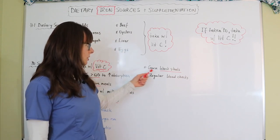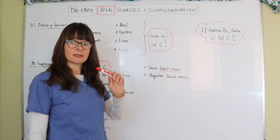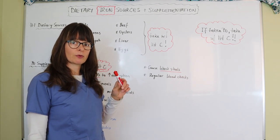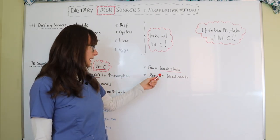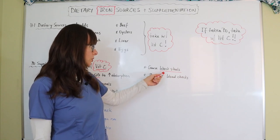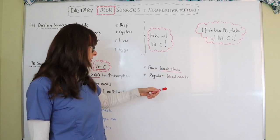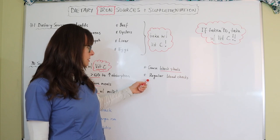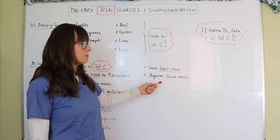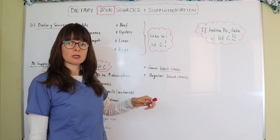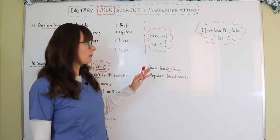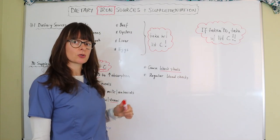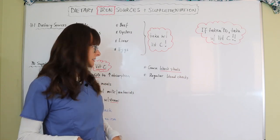Iron supplements can also cause black stools because it's a black substance that the patient takes, so it's very important to distinguish that from a GI bleed. The patient is also supposed to get regular blood checks because maybe they don't need iron supplementation for the rest of their lives, just until they have restored their iron stores, and then we can revert back to dietary sources for maintenance.